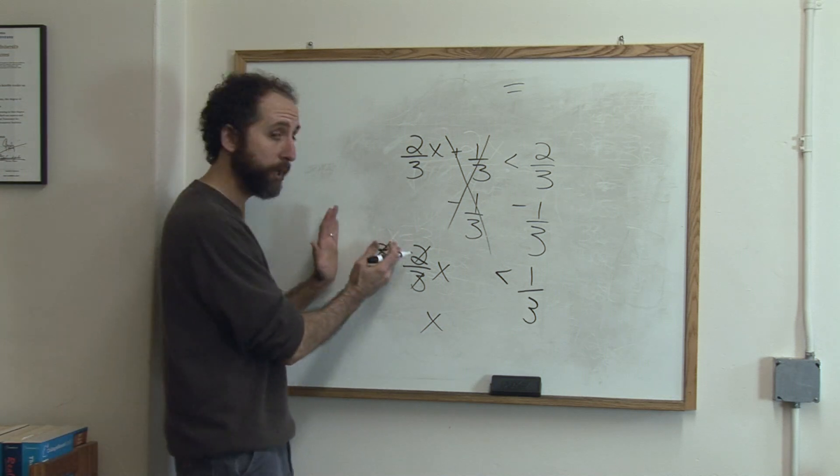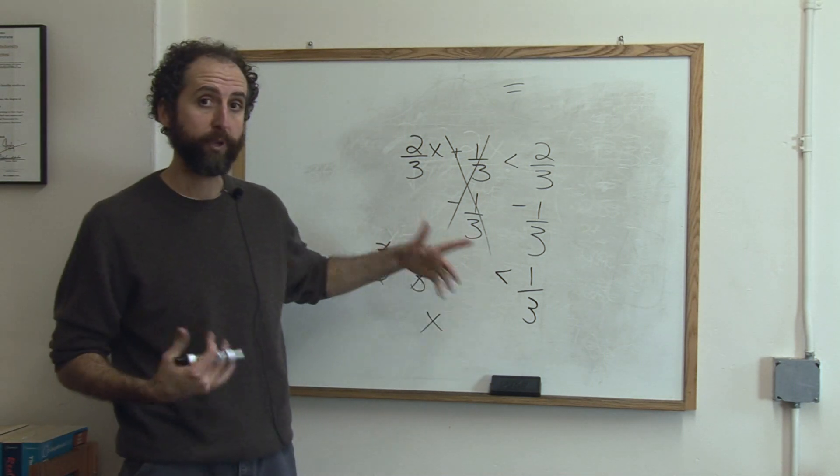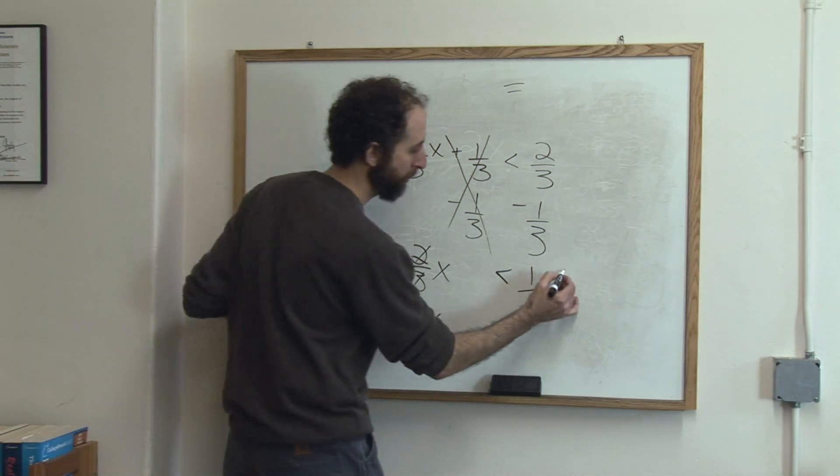Now remember, whatever you do to one side of an equation or an inequality statement, you have to do to the other. So we're going to multiply by 3 halves.